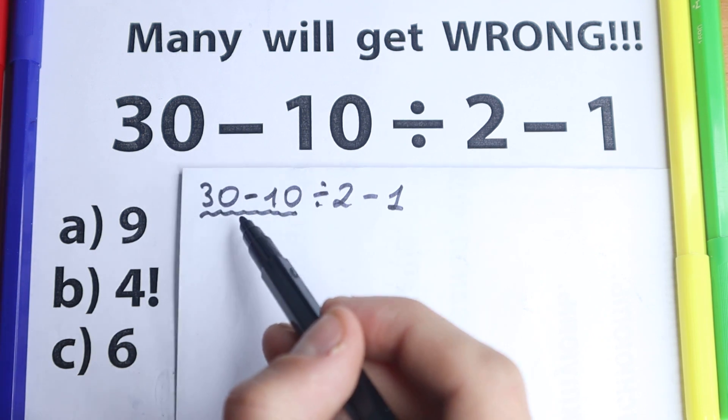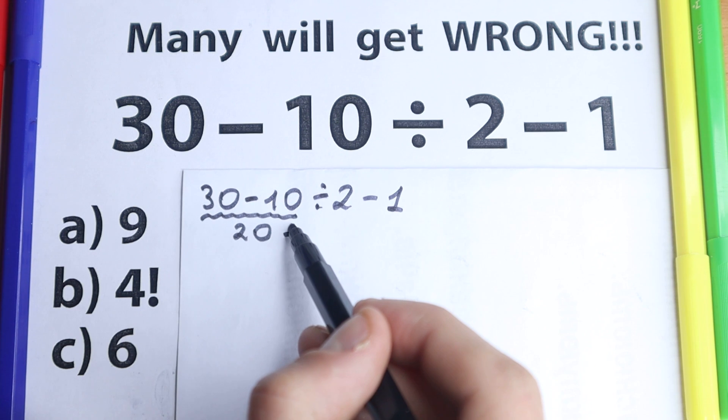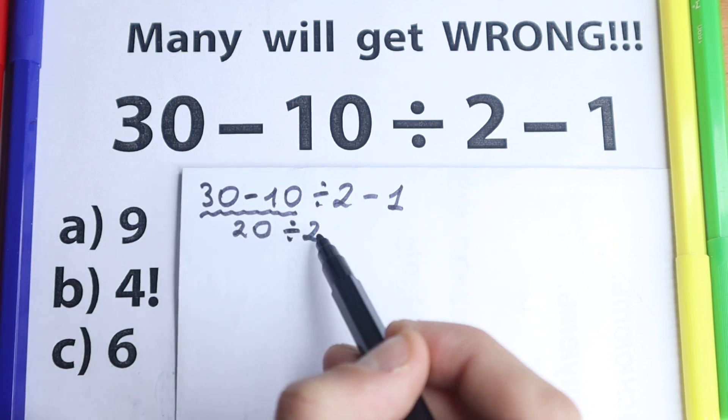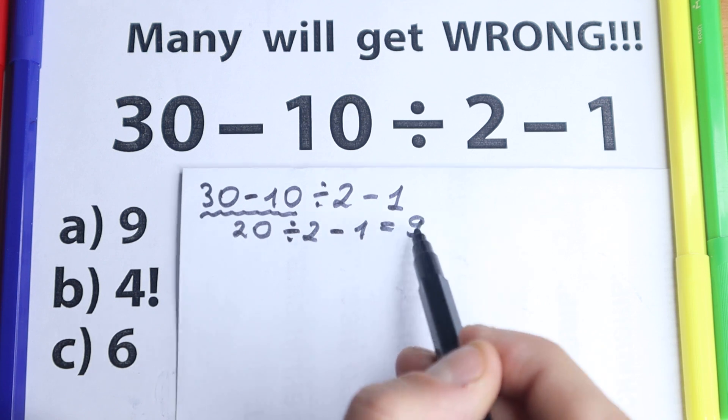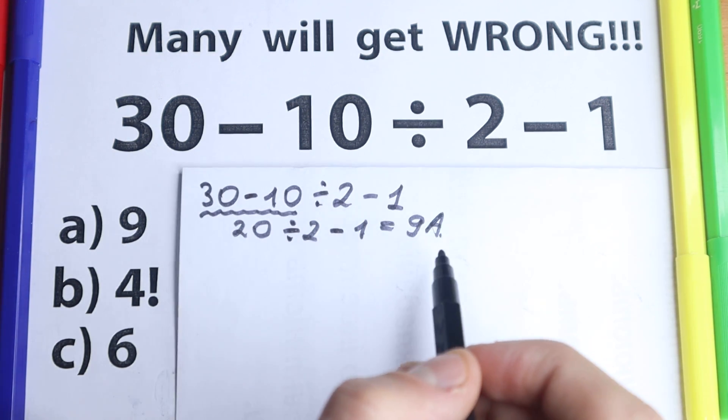20 divided by 2, we have 10, and 10 minus 1 equals 9. Yeah, we have 10 minus 9 equals 9, option A is correct. But this is, I don't know, I don't want to say this is correct or incorrect.